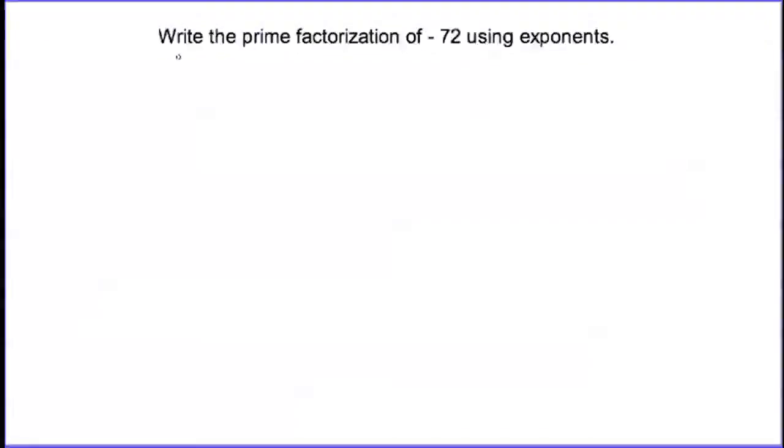In this question we're being asked to write the prime factorization of negative 72 using exponents. We're going to use a factor tree once again, and I'm going to start off with negative 72 at the top.